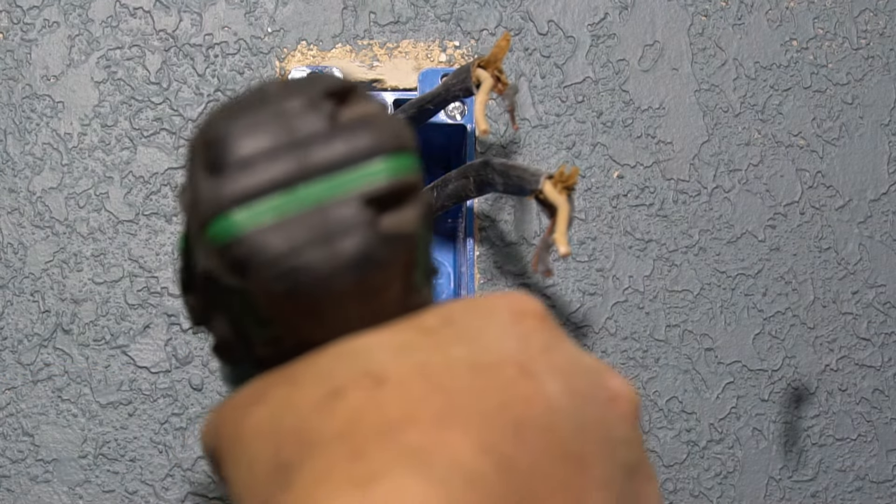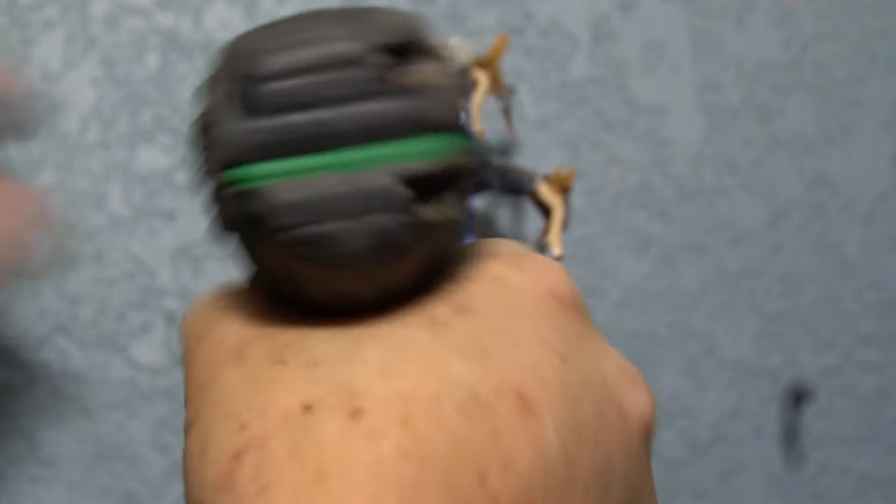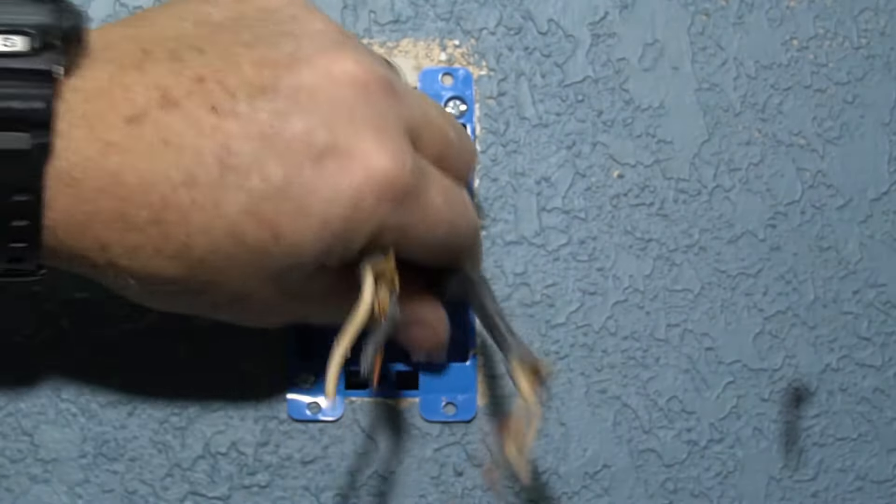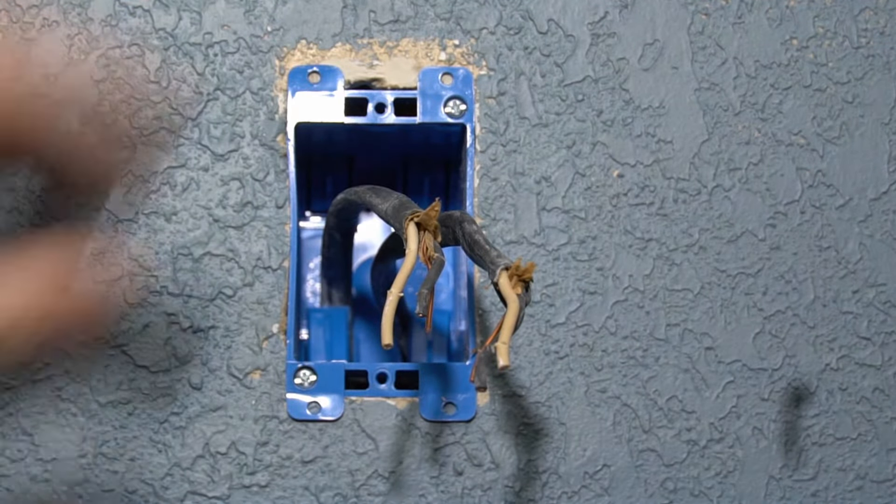Push that back in there and push the box in. Take a screwdriver, power screwdriver, Phillips. Don't tighten it up too much, it's just a little plastic tab so the box kind of sucks in a little bit. Box is in there now and we're ready to put our switch in.